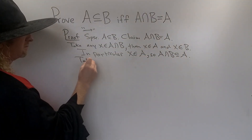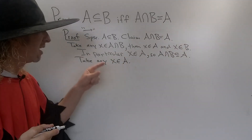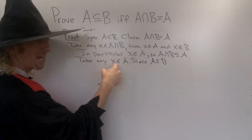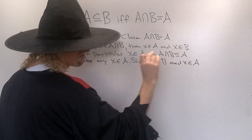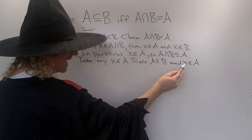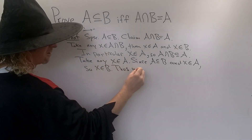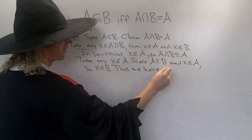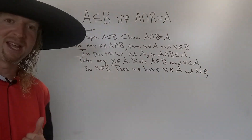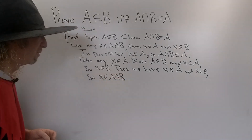We have to show that every element in A is also in the intersection, so take any x in A. Now we have to show it's in the intersection. Since A is contained in B and x is in A, therefore x is also in B. So we have x in A and x in B — and that means x is in A intersection B.